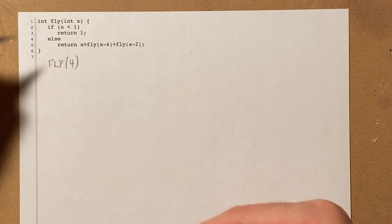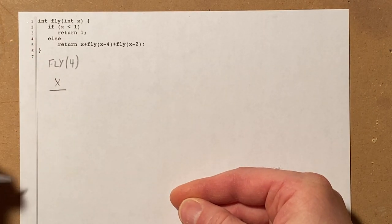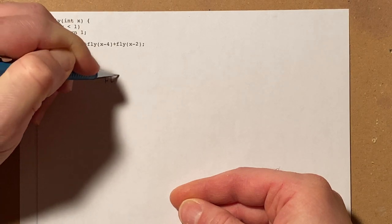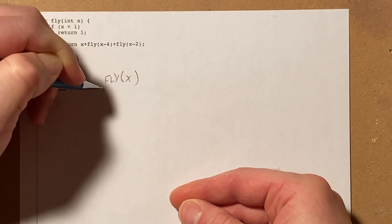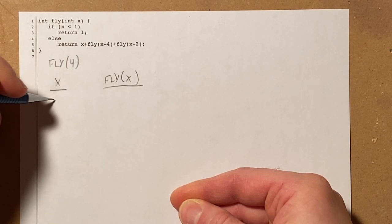So instead of just tracing, I'm going to create a little table where I'm going to keep track of the value of x, and I'm going to keep track of the value of fly for that x value. And I'm going to start completing this table when x is 4.